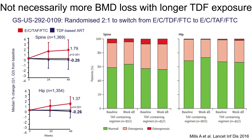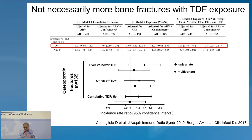Data from the 109 study — switching from elvitegravir/cobicistat/TDF/FTC to elvitegravir/cobicistat/TAF/FTC — shows an increase in bone mineral density with switching to TAF, but no substantial bone mineral density decrease over time with TDF. Data from the French cohort and the North American cohort also show that the use of TDF is not significantly associated with bone fractures.